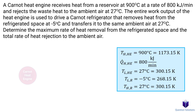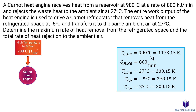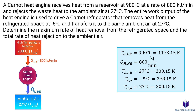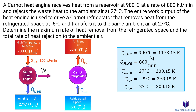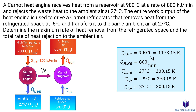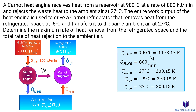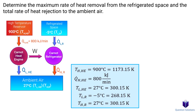Let's draw a diagram to understand this better. Our heat engine is here, with the high temperature reservoir at 900 degrees Celsius and the ambient air at 27 degrees Celsius at the bottom. It also receives 800 kJ of energy per minute from the high temperature reservoir. QL is the heat dissipated into the ambient air. The heat engine also produces a power output. For the refrigerator diagram, we have the ambient air at the top and the refrigerated space at the bottom. The power output from the heat engine is the power input to our refrigerator. Both share the same ambient air, and the refrigerator takes heat away from the refrigerated space, so the arrow must be flipped.